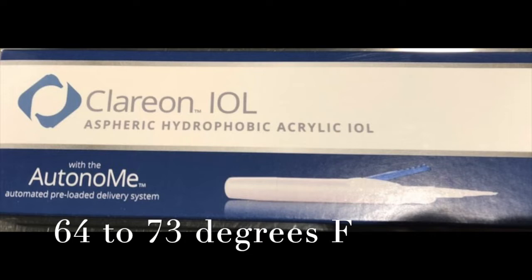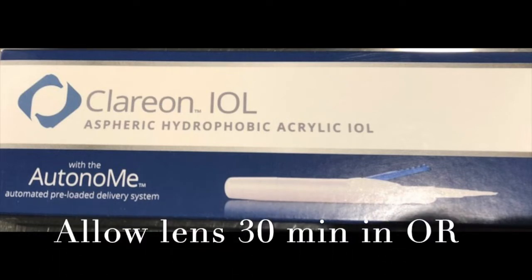The key is to store the lens between 64 and 73 degrees Fahrenheit and to also allow the lens 30 minutes to warm up in the OR prior to insertion inside of the eye. This allows the lens to be more pliable and bend properly as it comes down the cartridge towards the tip.